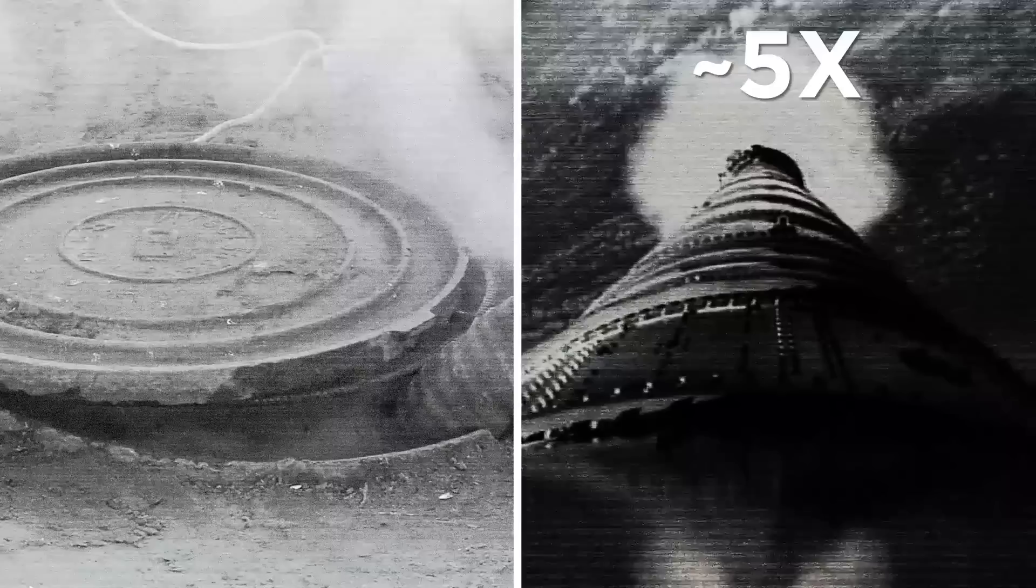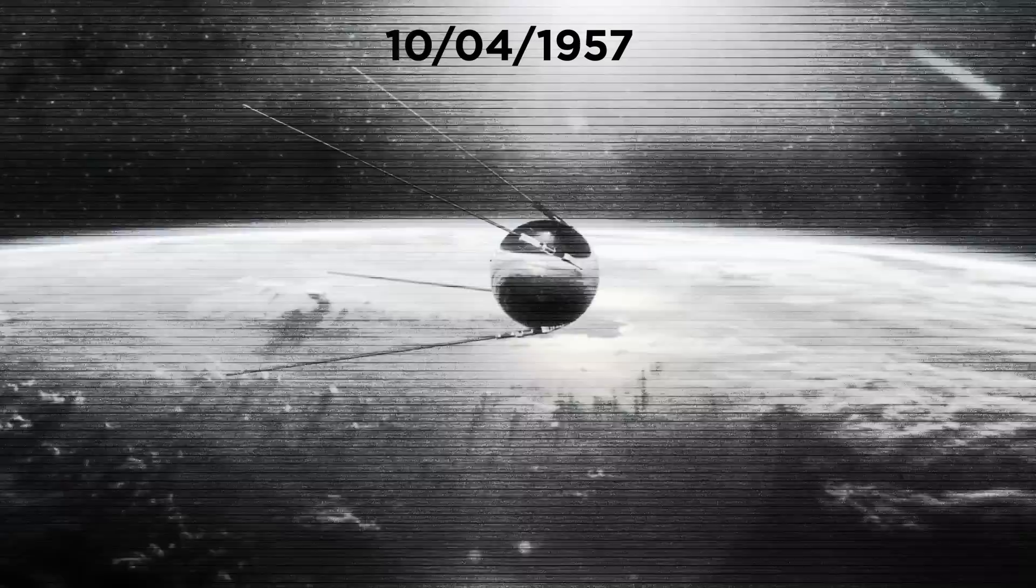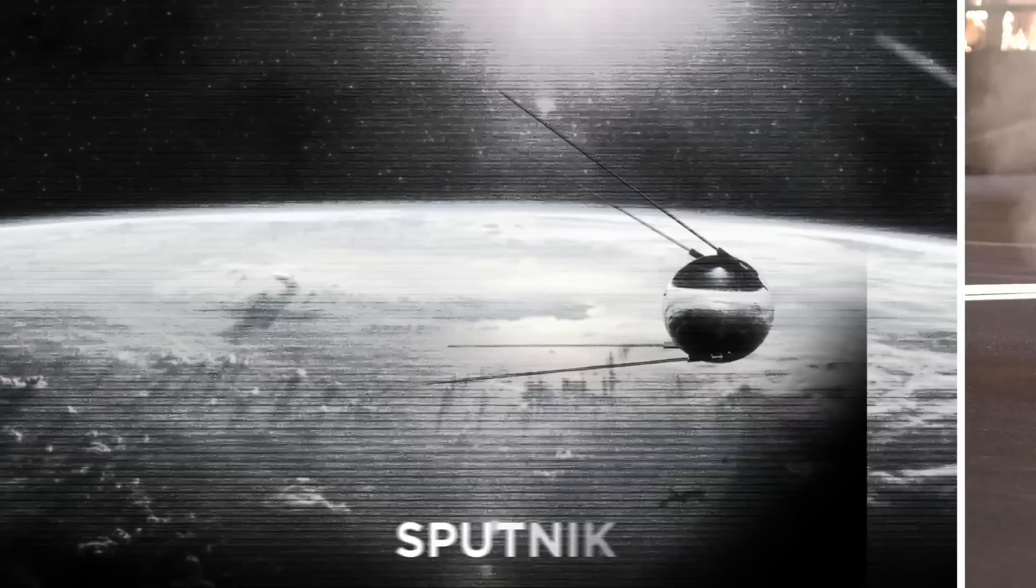Though Brownlee expected the cap to fall back to Earth, it never did, which means that when you're gazing up at the stars, you might be looking at a floating manhole cover. On October 4, 1957, the Soviet Union launched Sputnik, the world's first artificial satellite, so the U.S. technically won the space race with their unusual entry, a manhole.